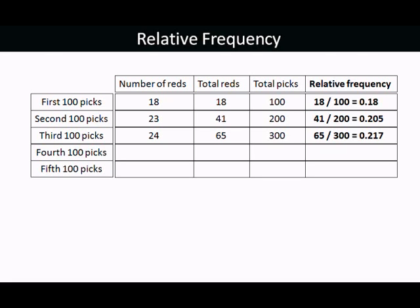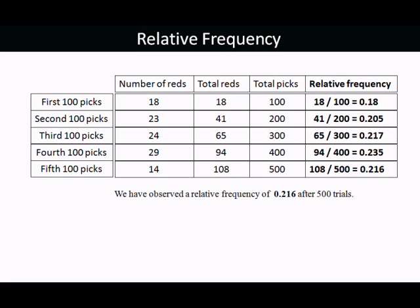So the relative frequency of reds is 0.217. Next 100, 29 reds, making 94 so far out of 400. So the relative frequency, 94 out of 400 is 0.235. And finally, last 100 picks, we pick out 14 reds. So that makes 108 reds so far out of 500. So the relative frequency is 108 out of 500, which is 0.216.